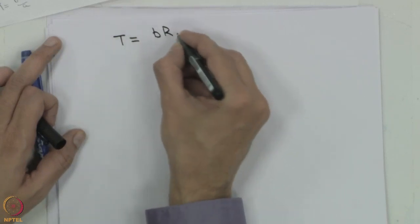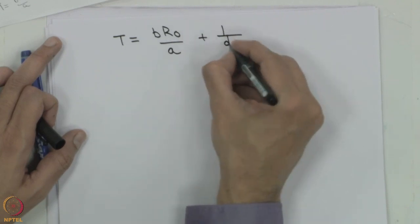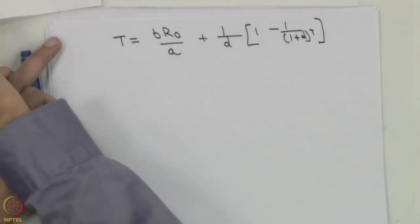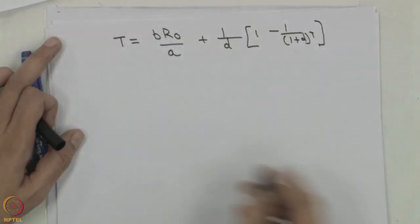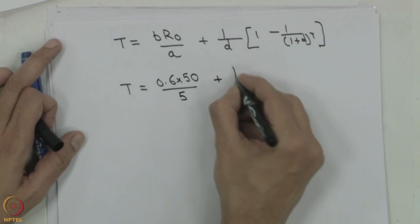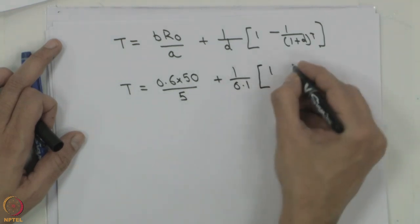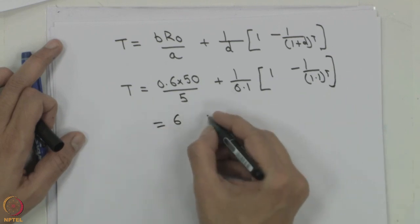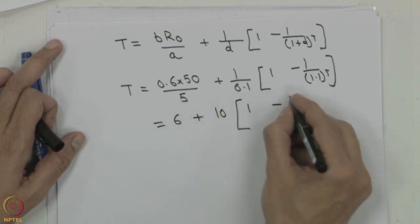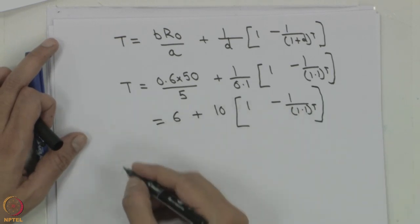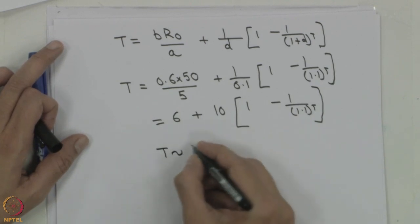We had derived, based on the geometric progression, the expression: T equals B times R0 divided by A, times (1 plus d), times (1 minus (1 plus d) raised to T). Substituting the values, T equals 0.6 into 50 divided by 5, plus (1/0.1) times (1 minus 1.1 raised to T). You can solve this iteratively — start with a value of T, calculate, get the next value, and iterate until convergence. You will get T approximately equal to 13.1 years.